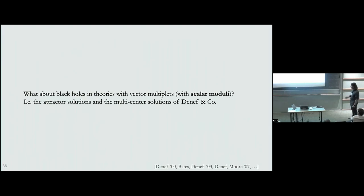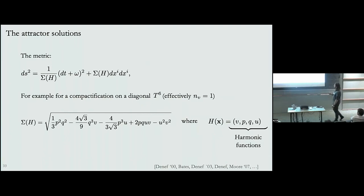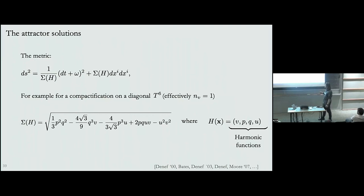What about black holes in theories with vector supermultiplets, which can have scalar moduli? The metric is very similar to the Israel-Wilson metric, but the action is more complicated because one has to take into account scalars with a nontrivial profile on the black hole background. The relation between the conformal factor of space — called the entropy function — and the harmonic functions is more complicated: previously it was U times Ũ, but now it's the square root of a complicated polynomial of harmonic functions.